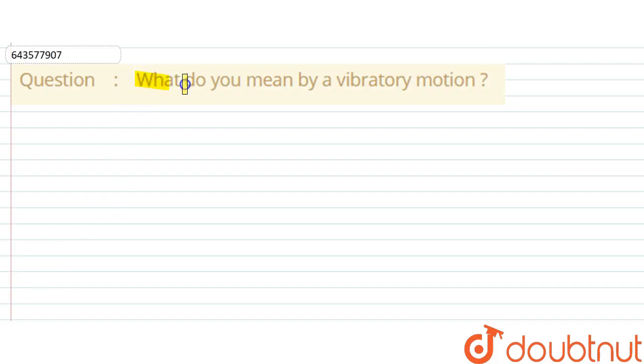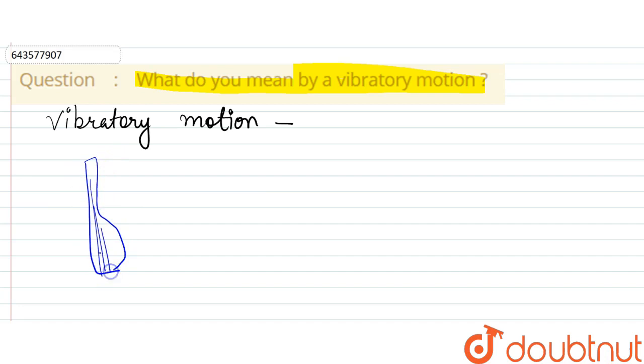The question says: what do you mean by vibratory motion? So vibratory motion - in that motion what we have is, for example, when we pluck the string on a guitar, what happens is they move to and fro, right? So the motion...